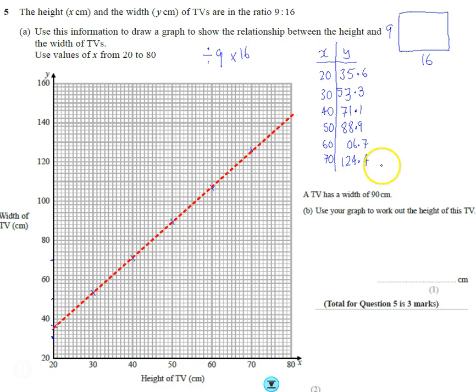So there is another way you can do it. You can think of the gradient. Remember it's the change in y and the change in x. So we know that the width is going to be 16, it's going to go up 16 every nine it goes along. So you could count nine along, 16 up, nine along, 16 up. But that one's a bit trickier because it means you're going to count using the scale.